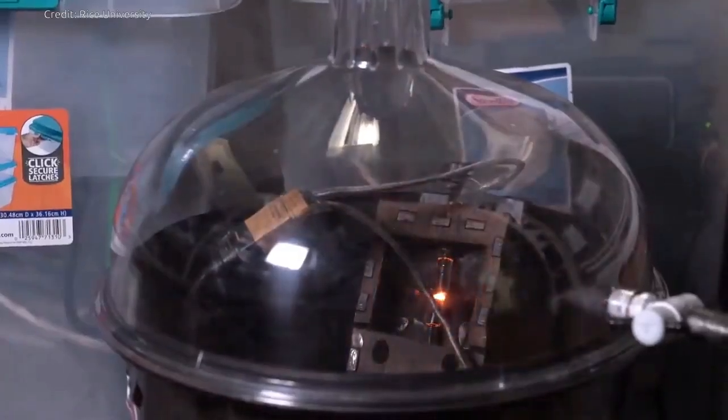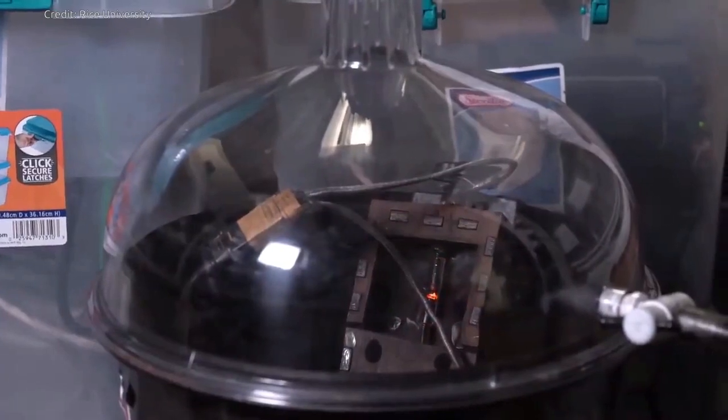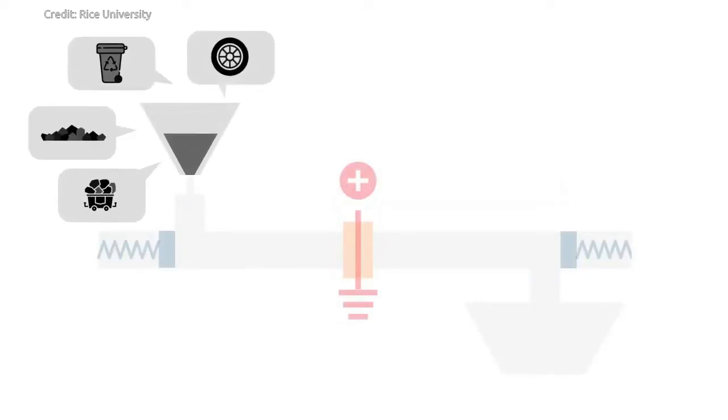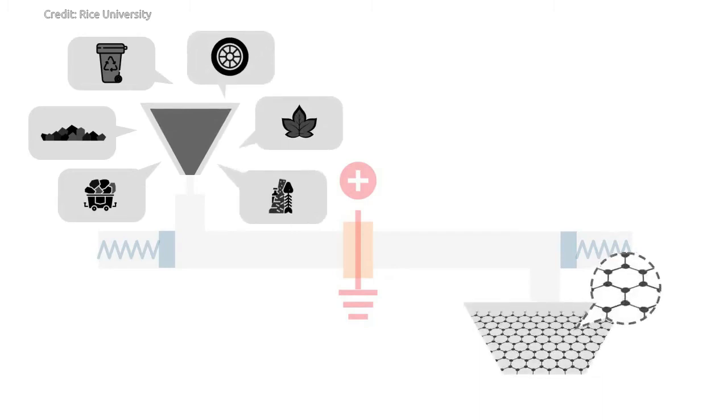The process is quick and cheap. This flash graphene technique can convert a ton of coal, food waste, or plastic into graphene for a fraction of the cost used by other bulk graphene-producing methods.